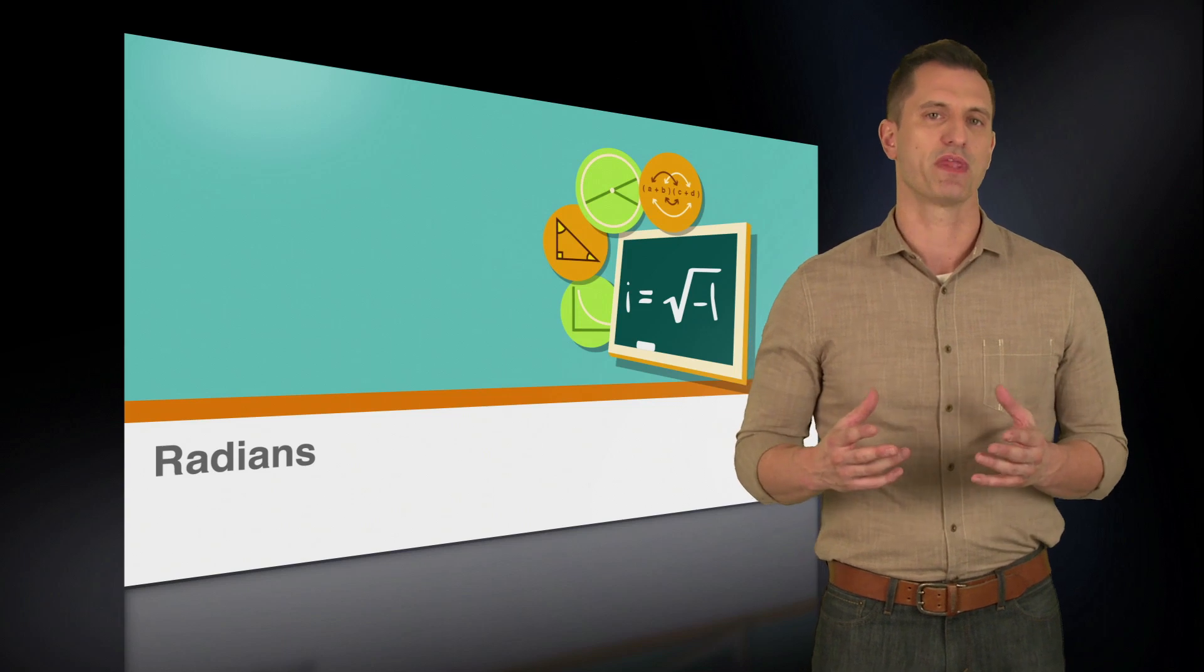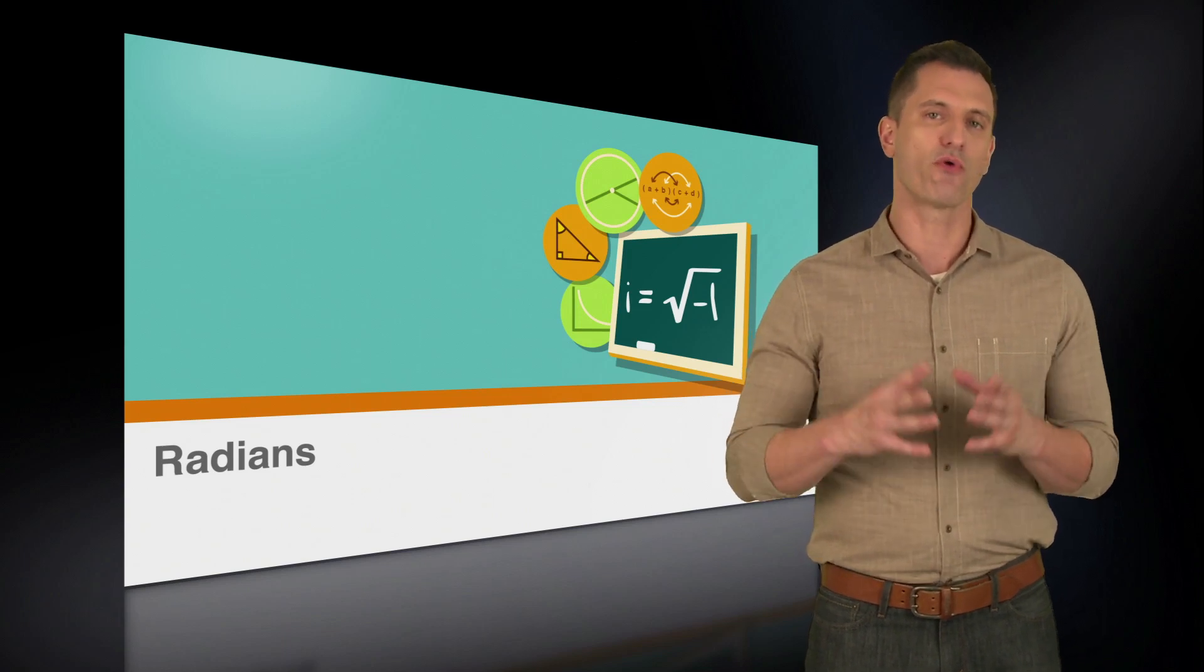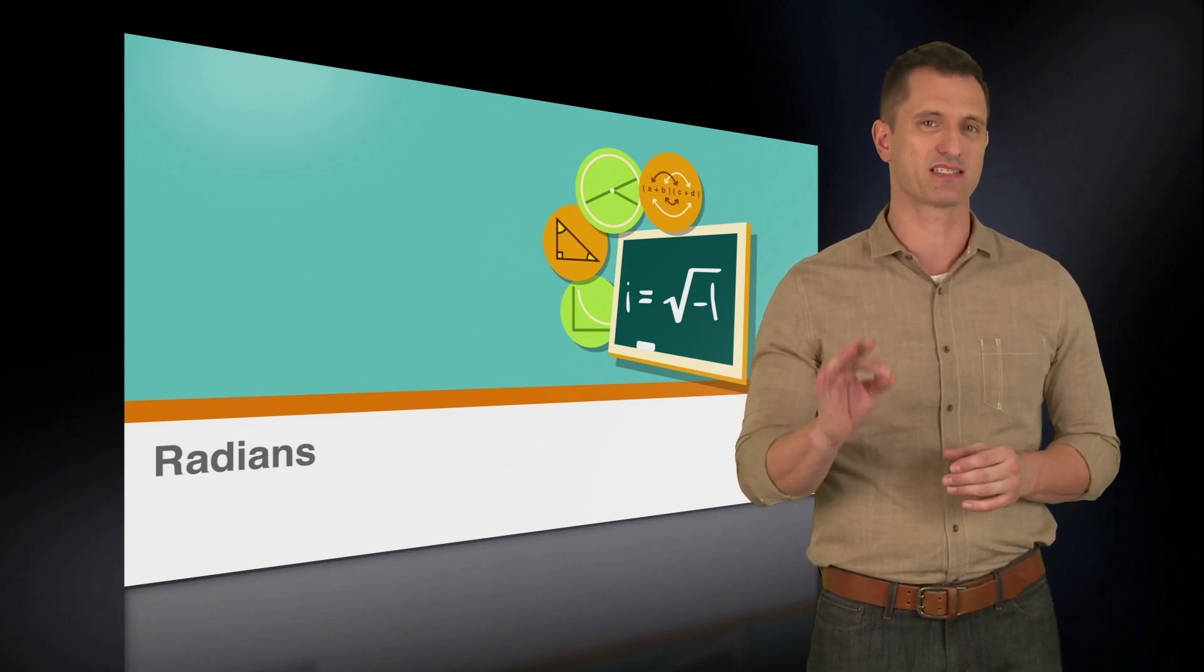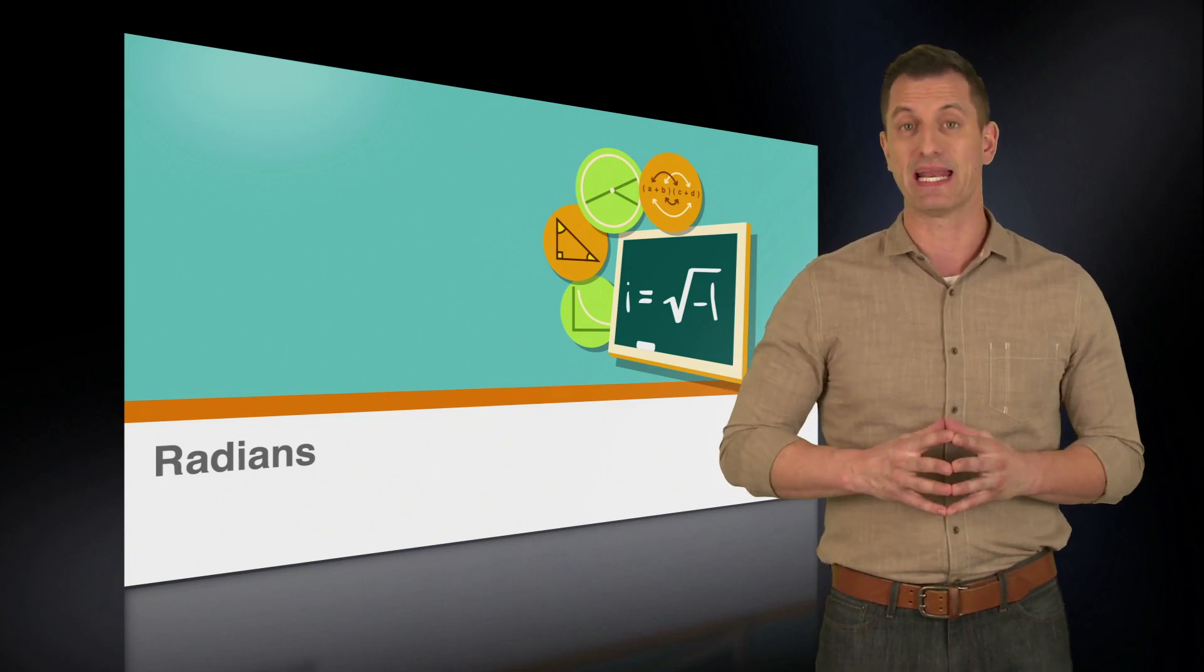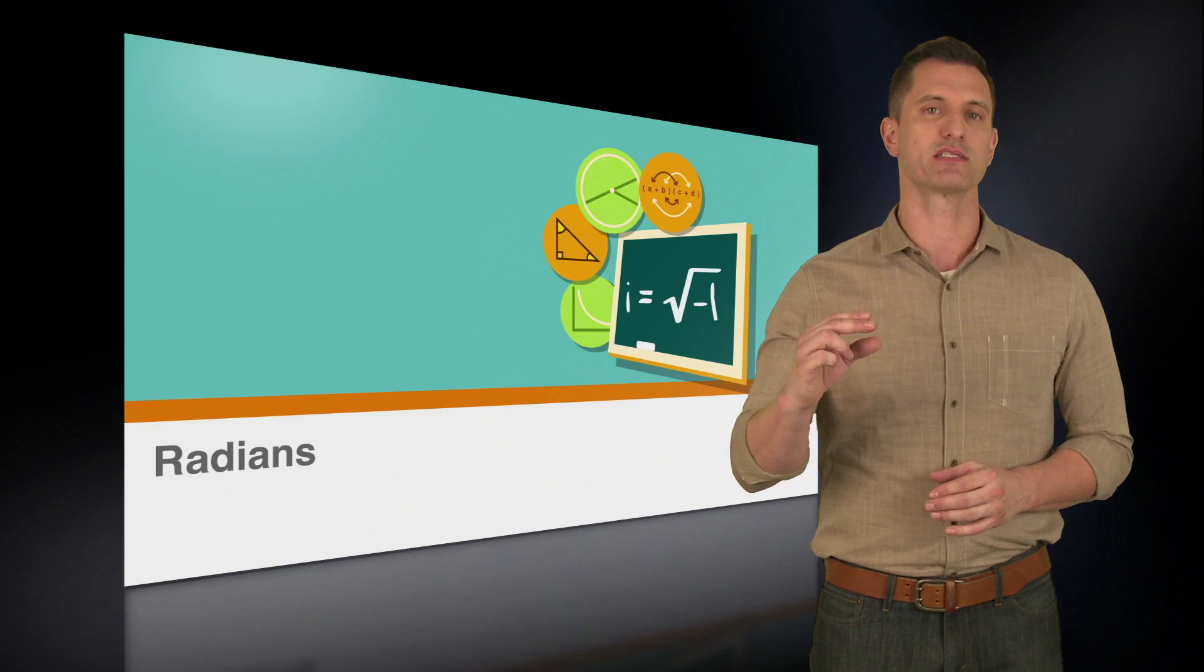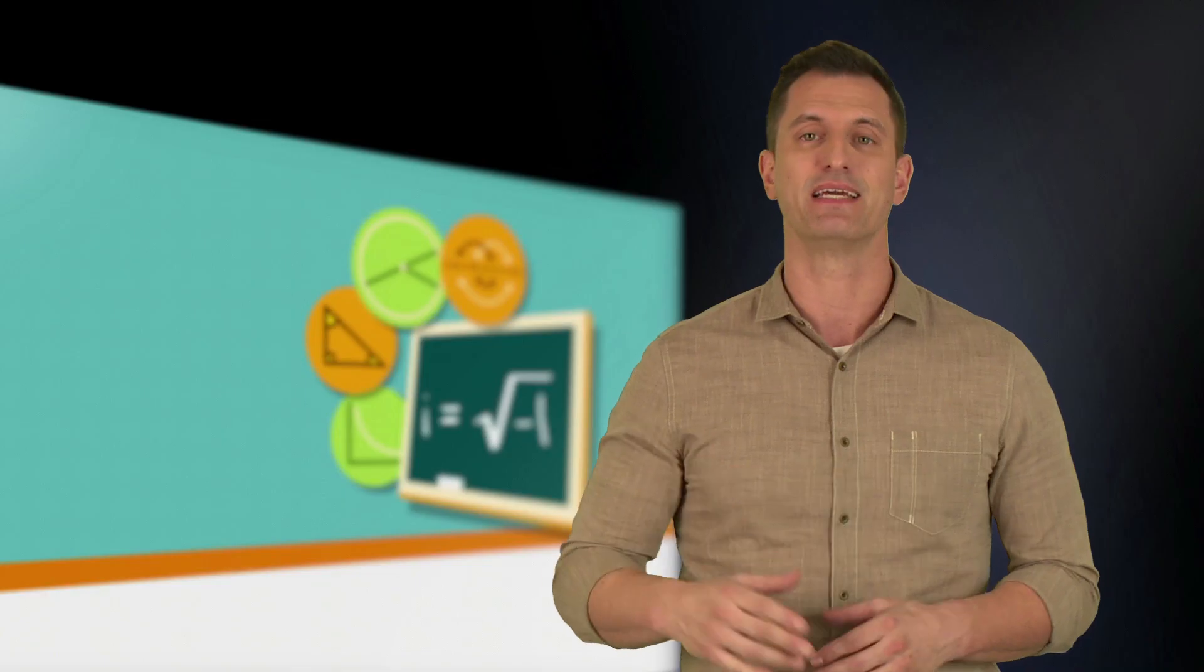Most students will find it easier to convert the radians into degrees. So let's talk about conversion. As we previously discussed, the formula box at the beginning of each math section tells you that there are two pi radians in a circle. It actually says the number of radians of arc in a circle is 2 pi.